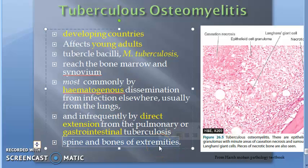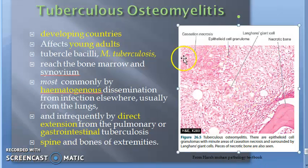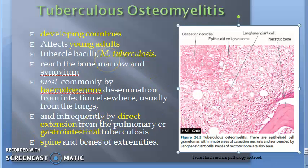The spine and bones of extremities are affected. If the spine is affected, it is called Pott's disease. In the microscopy you will see caseious necrosis, epithelioid cells, granuloma, and Langhans giant cells. There will also be a discharging sinus, and the joint space and intervertebral discs are also involved.